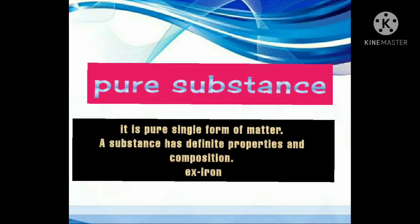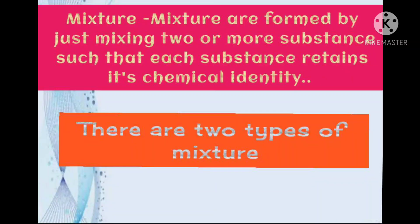Pure Substance. It is a pure single form of matter. A substance has definite properties and definite composition. It is a substance that is a pure single form of matter with definite properties and definite composition. Example: iron.